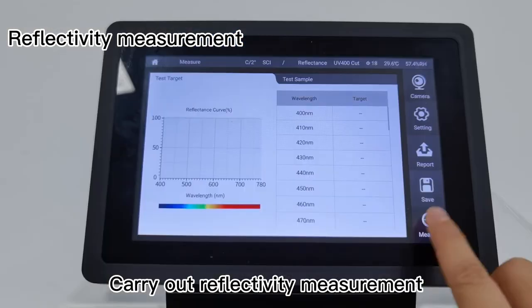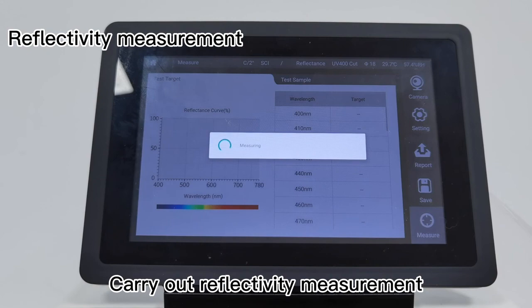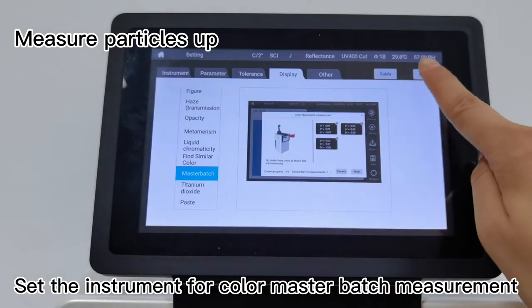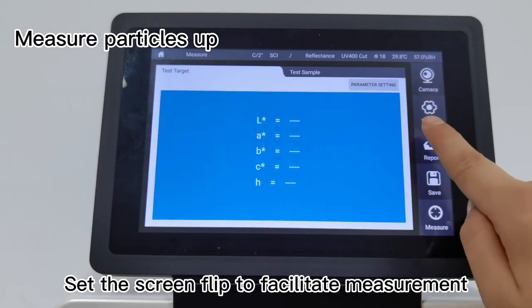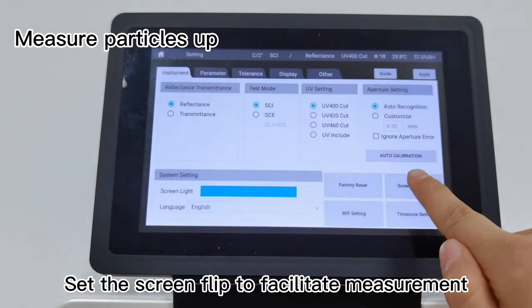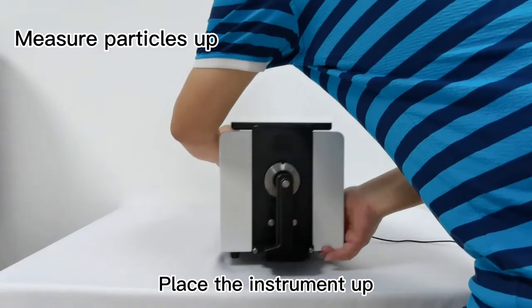Measure particles up: Set the instrument for color master batch measurement. Set the screen flip to facilitate measurement. Place the instrument up.